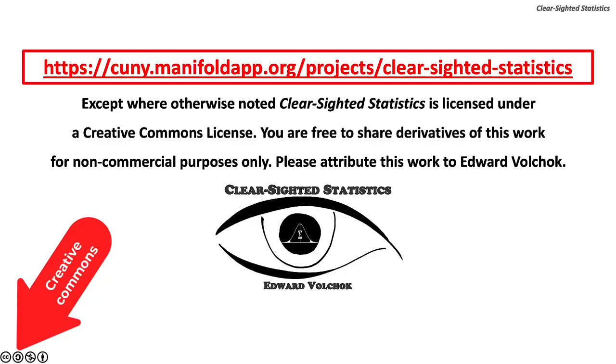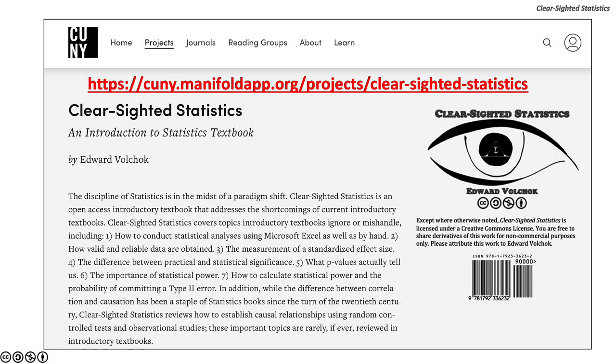Except where otherwise noted, Clear-sighted statistics is licensed under a Creative Commons license. You are free to share derivatives of this work for non-commercial purposes only. Please attribute this work to Edward Volchak. You can access Clear-Sighted Statistics for free, along with its Excel and PowerPoint files on the CUNY Commons. The URL is https://cuny.manifoldapp.org/projects/clear-sighted-statistics.